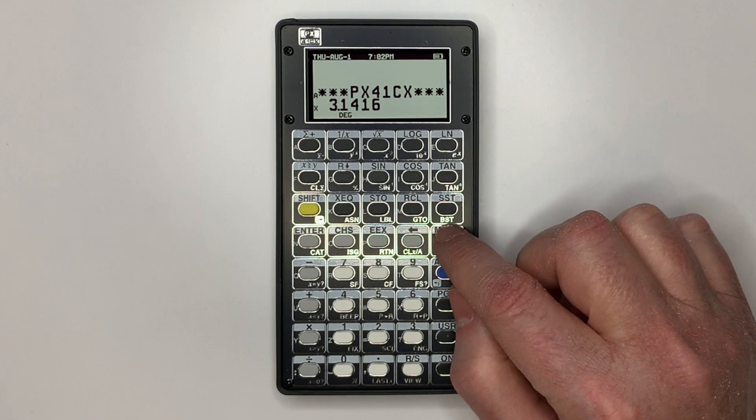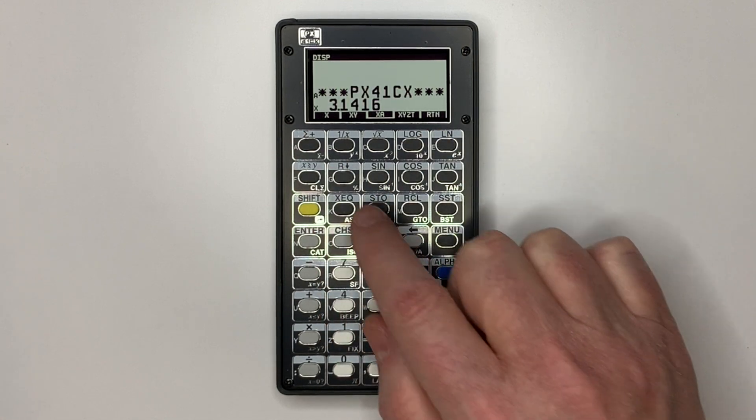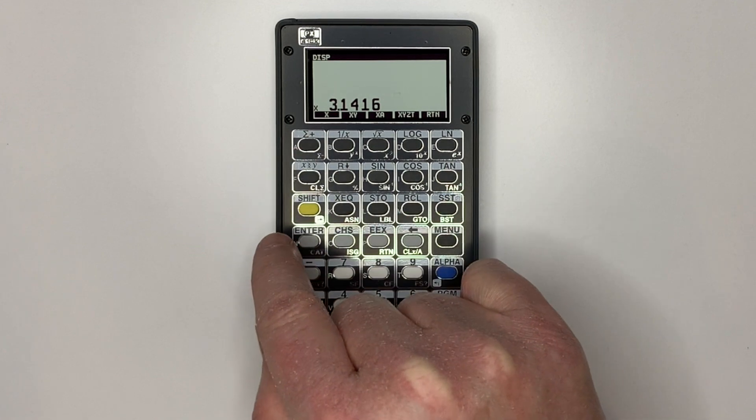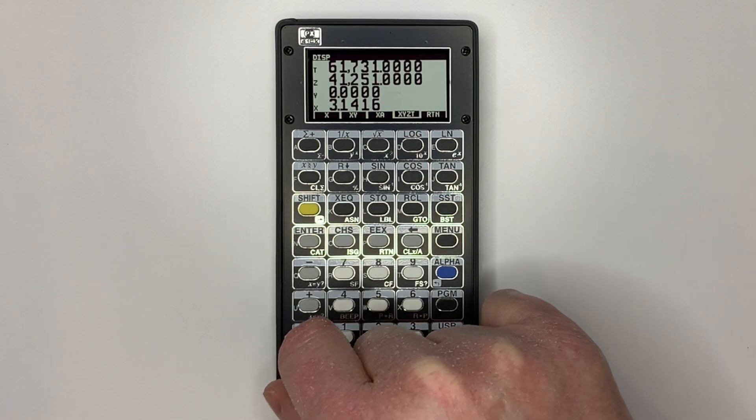Let's have a look at some of the options. Click the menu, then go to display. From there we can select showing X only, X and Y, X and Alpha, or the whole stack.